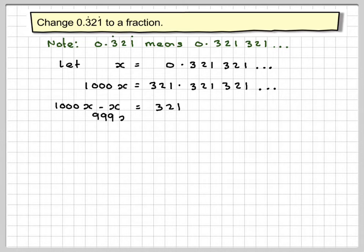1,000x minus x is 999x. It's equal to 321. And then, because we want to find x, because x was the original recurring decimal, x will be 321 divided by 999.